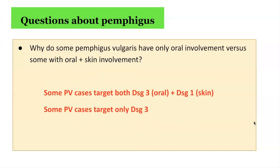For the third question — why do some pemphigus vulgaris cases have only oral involvement while others have both oral and skin findings? The reason is that some pemphigus vulgaris cases only target DSG3, resulting in only oral lesions. In other pemphigus vulgaris cases, both DSG3 and DSG1 are targeted, and therefore you have mucocutaneous findings in both sites.